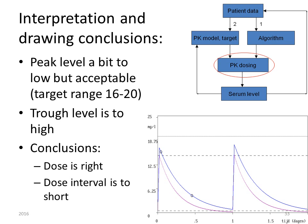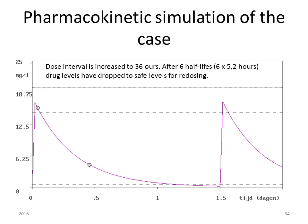The conclusion is that the peak level is a bit too low but acceptable, since the target is 16 to 20 milligrams per liter and the actual level is 17 milligrams per liter. However, the trough level is too high — a too-high trough level results in renal toxicity. So the dose is right, but the dosage interval is too short. Increasing the dosing interval to 36 hours allows levels to drop to safe levels before re-dosing.